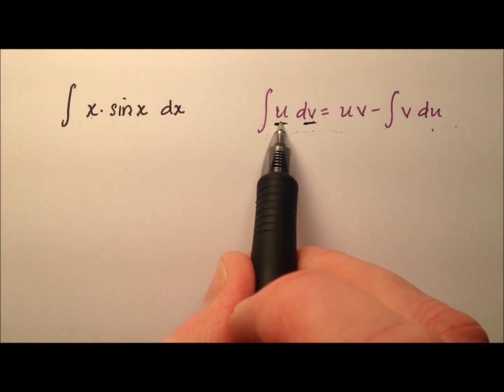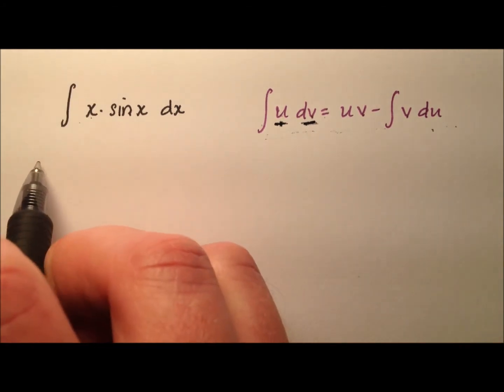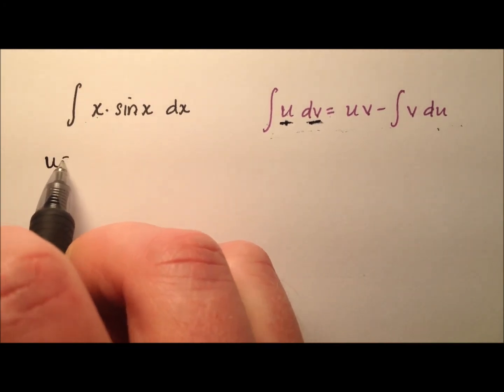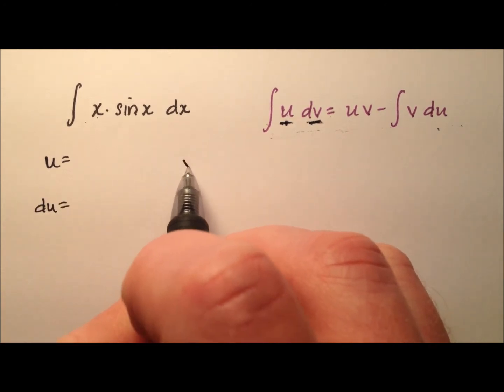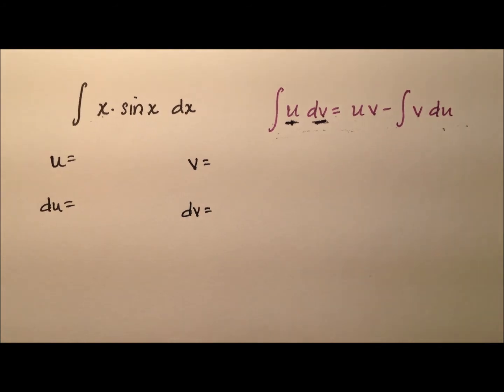The u we know ultimately we're going to end up differentiating so we'd like to use something that is nice to differentiate and the dv ultimately we're going to integrate so maybe something that would be nice to integrate. So let's go ahead and write u equals with a du below it equals and then we have our v equals with that dv that we're looking for right below that.